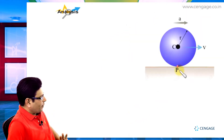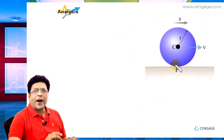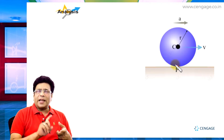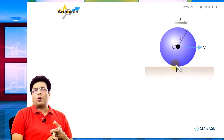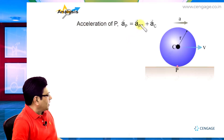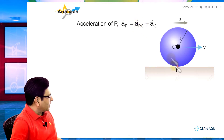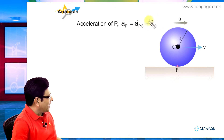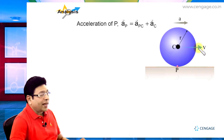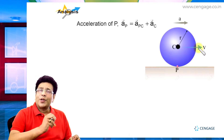Let us make the diagram. We can write the vector equation of acceleration of point P as: acceleration of P with respect to C, plus acceleration of C. This acceleration of P with respect to C means the acceleration of the lowest point with respect to the centre of the disk, and AC represents the linear acceleration of the centre of the disk.